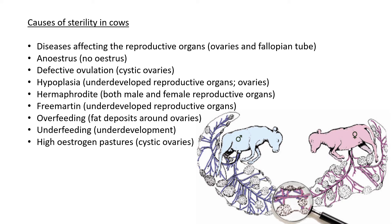Fourthly, hypoplasia again — underdevelopment of the reproductive organs, here specifically of the ovaries, meaning no egg cells will be produced. Fifthly, hermaphroditism: some cows are actually hermaphroditic, meaning they have both male and female reproductive organs, which compete for space. These animals often have levels of testosterone in their bodies, leading to underdeveloped ovaries. Hermaphrodites are generally unable to reproduce — they are sterile, meaning no egg cells and no sperm cells.